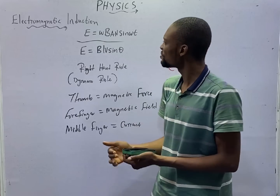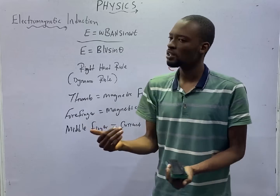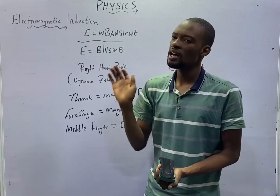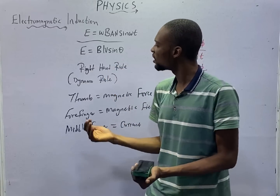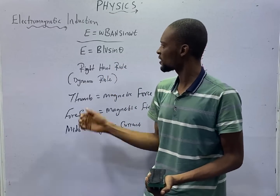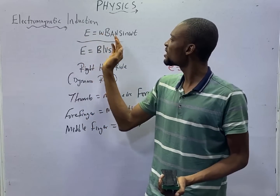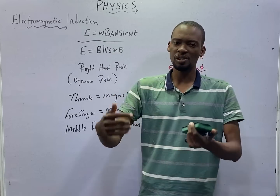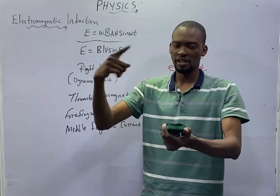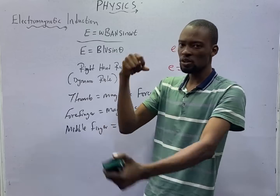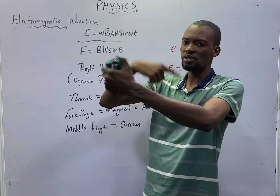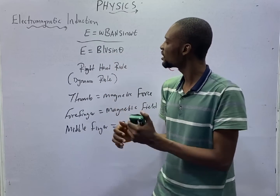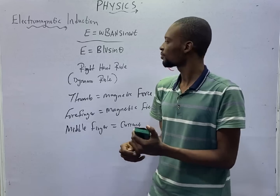All these will be seen later in calculations — you will see the meaning of everything and how to use them. For now, know that E = BAN sinωt for induced EMF in a coil, while for a straight conductor that is not a coil, it is E = BLV sinθ.